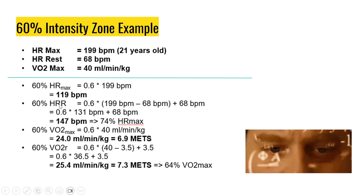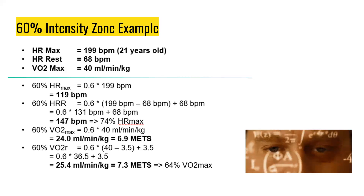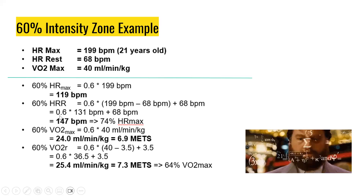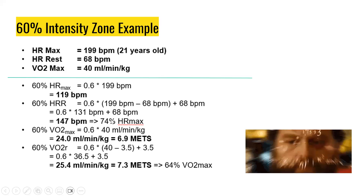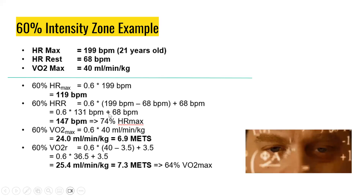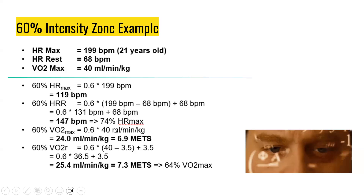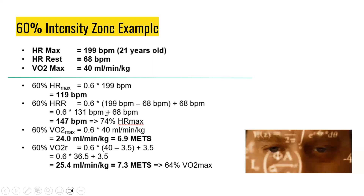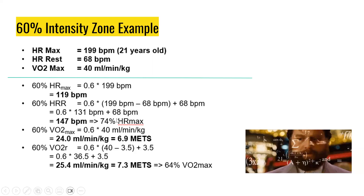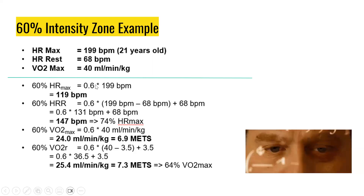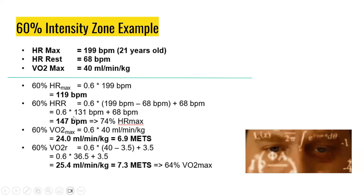When using the Karvonen method — the heart rate reserve formula — the value you obtain is going to be slightly higher, so just be mindful of this distinction. If we reverse-calculate: 60% from the Karvonen method would equal approximately 74% using the heart rate max formula. So the intensity using the heart rate reserve method is higher. You'll be able to observe this for your lab partner as well.